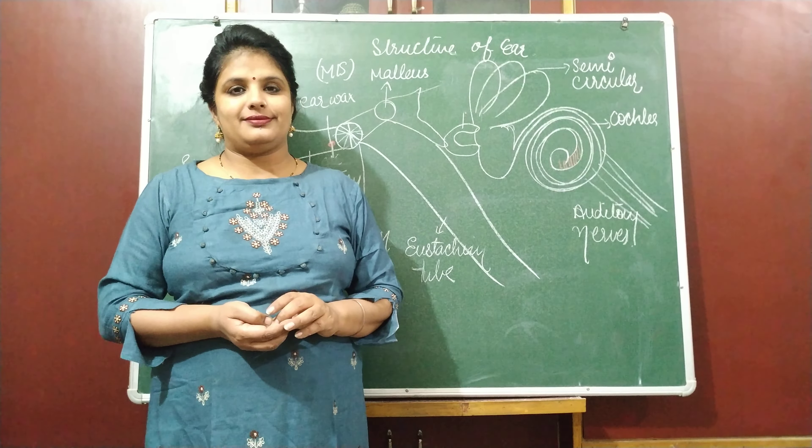Here we have the part of the internal ear. We have a set of three semicircular canals, and then we have a snail-like structure that is called the cochlea. From the cochlea, nerves arise and these nerves are called auditory nerves. The parts of the internal ear are: semicircular canals, cochlea, and auditory nerves. Now we are going to discuss the semicircular canals in detail.